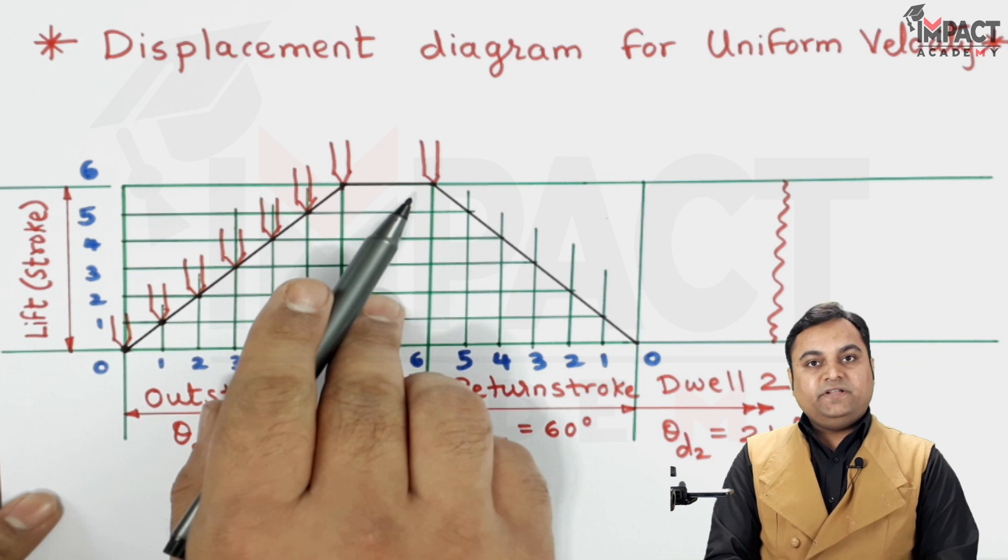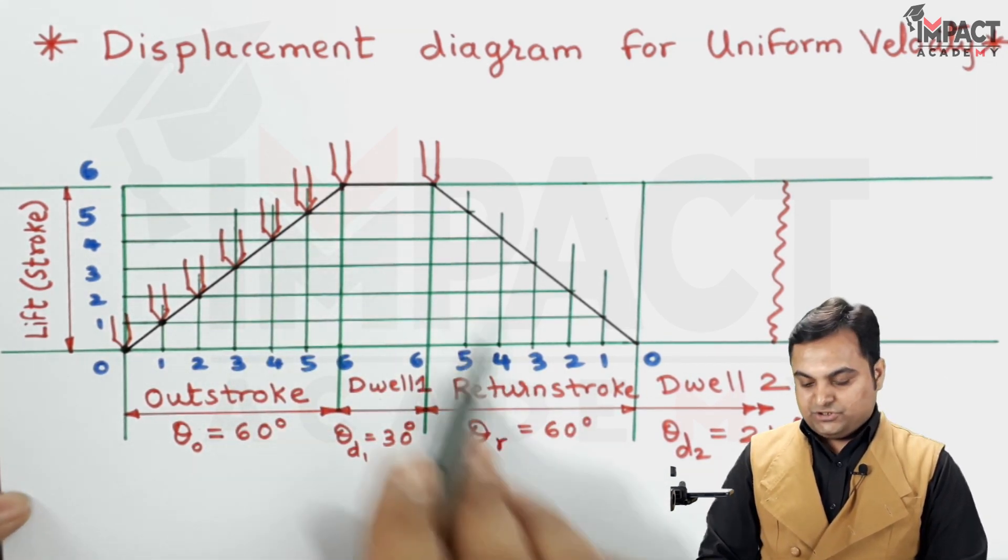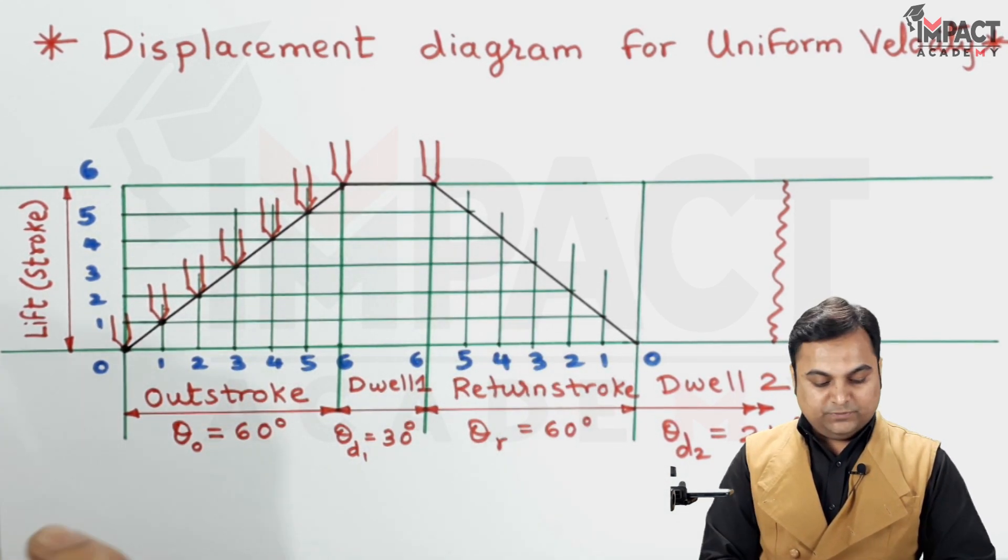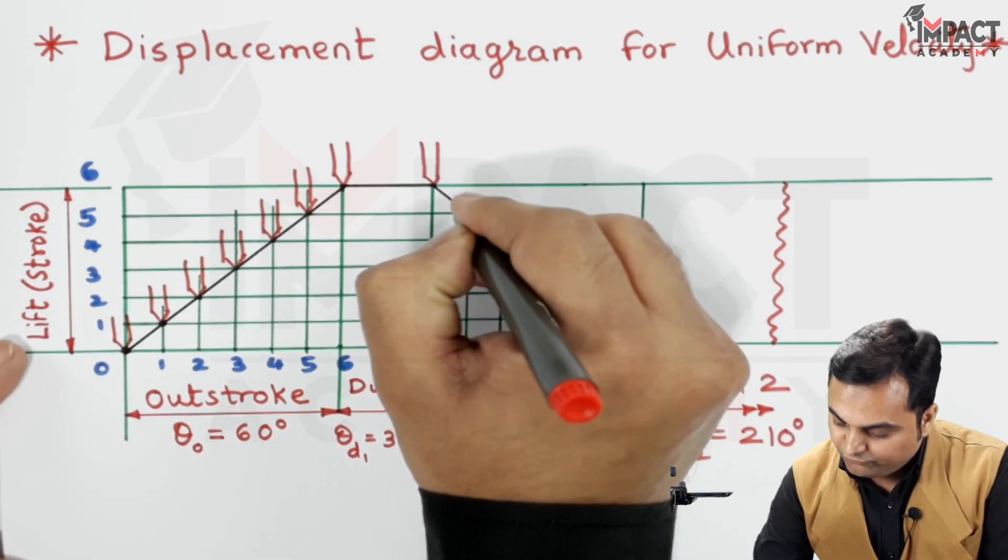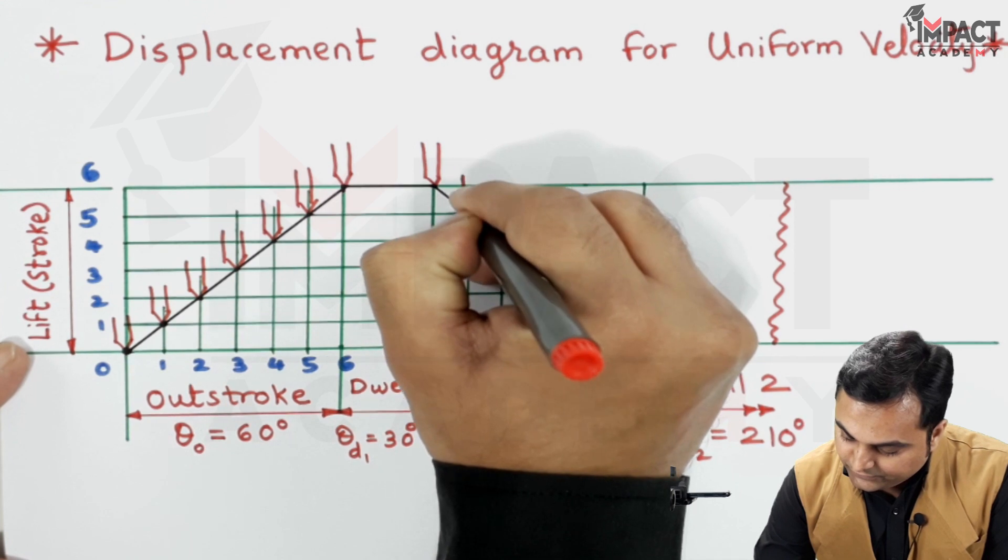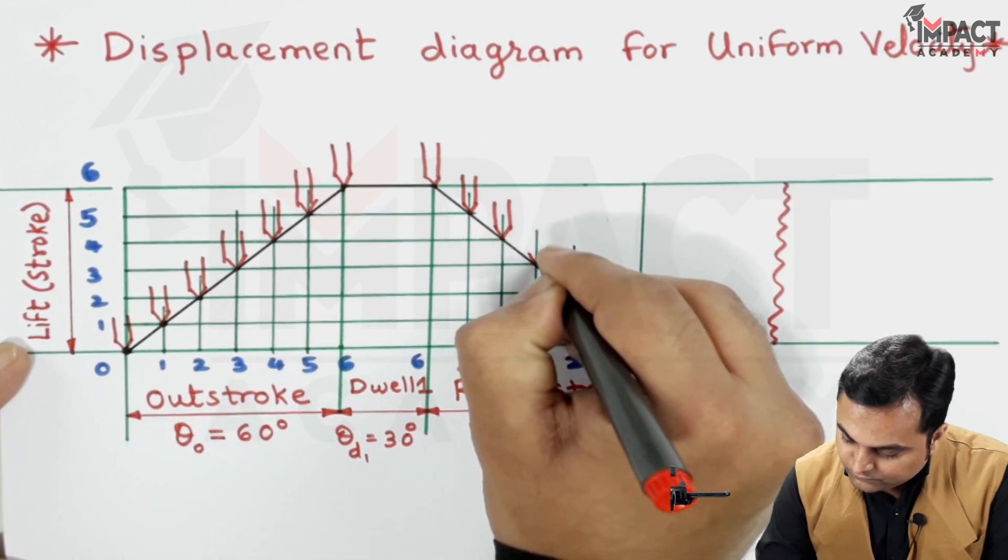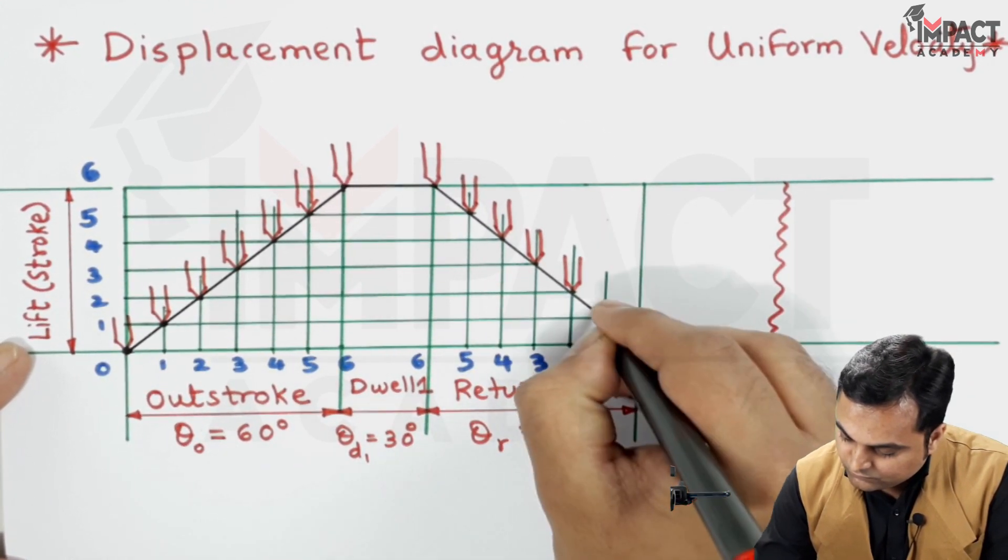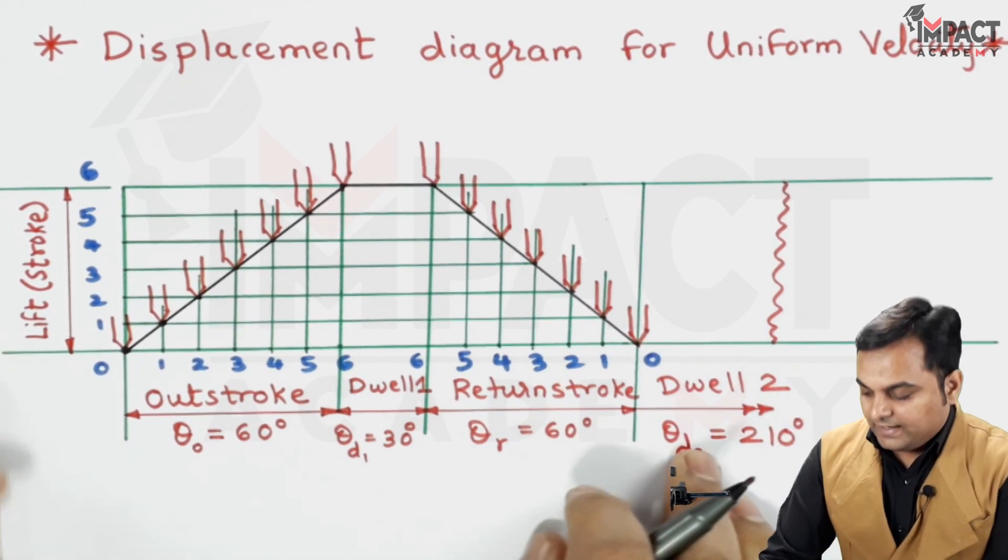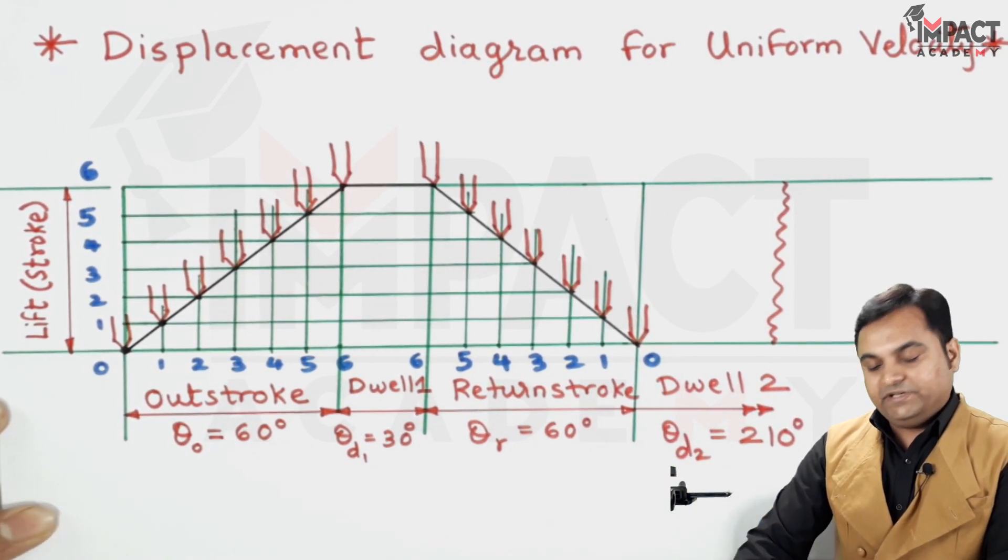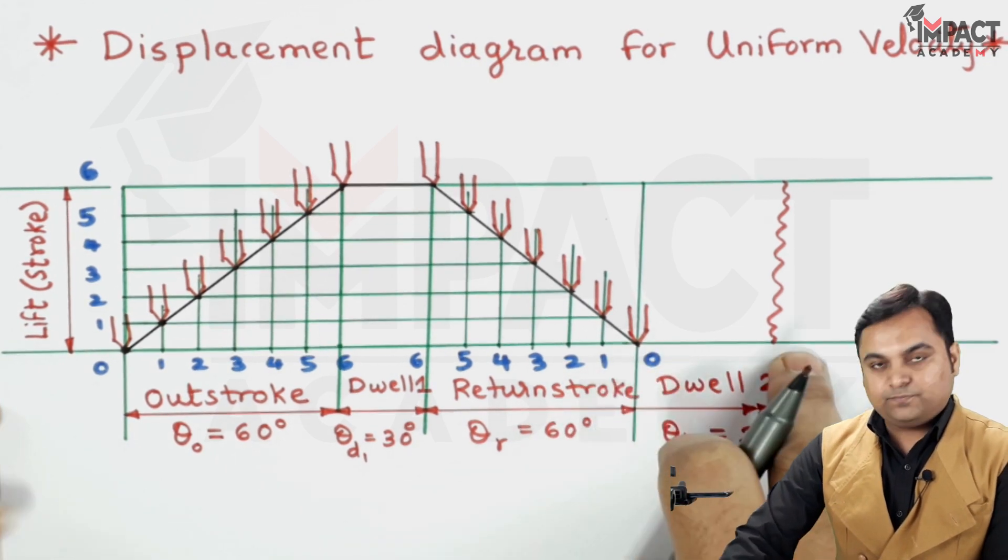Now this descending line, that is for the next 60 degrees of cam rotation, shows the follower in the downward position. It will return back to its original position. So it would start to fall or descend and finally returning to the original position. And then for the remaining 210 degrees it will remain at this bottom position.